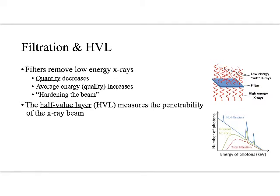Now we'll transition from filtration to half value layer — we might as well introduce it now because it helps us better understand how filtration works. Filters remove low-energy x-rays, so the quantity of x-rays in the beam decreases, but the average quality of the x-ray beam increases. We drop the quantity but increase the average quality, and we call this hardening the beam. It's a good thing.